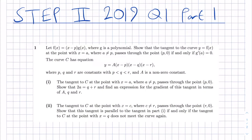This part of the question says: let f of x be equal to x minus p times g of x, where g is a polynomial. Show that the tangent to the curve y equals f of x, at the point with x equals a, where a is not equal to p, passes through the point p, 0, if and only if g prime of a is equal to 0.